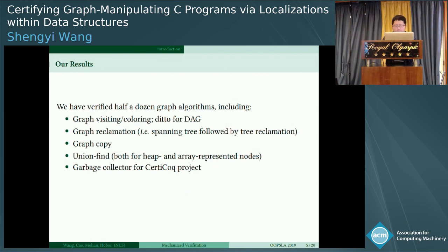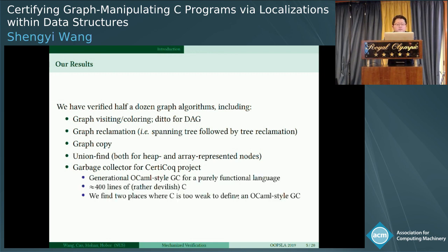Our result is that we verify six graph algorithms: graph visiting, graph reclamation, graph copy, two versions of union-find, and our flagship example is a garbage collector for the CertiCoq project. It is a generational Ocaml-style garbage collector for a purely functional language, which is the Coq language itself. It contains around 400 lines of C code. During the verification, we actually find two places where C is too weak to define an Ocaml-style GC. Too weak just means it's undefined behavior in standard C semantics. So from this sense, an Ocaml garbage collector is undefined according to the standard C semantics.